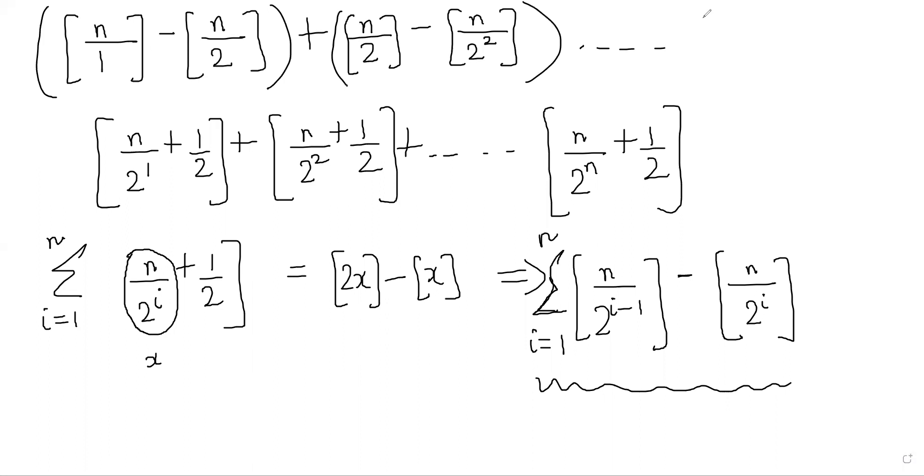The last term gives floor of n by 2 to the n. All the intermediate terms cancel due to the telescoping nature, and you end up with floor of n minus floor of n by 2 to the n.